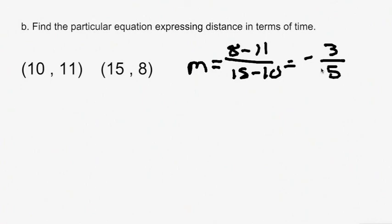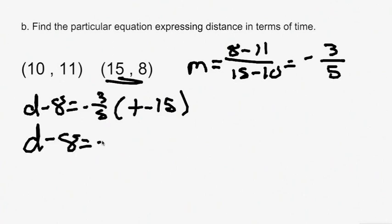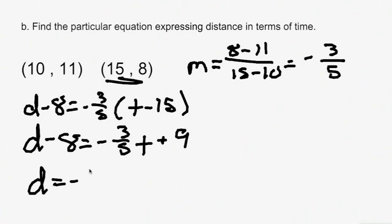So the slope is negative 3 fifths. Now we plug it into our point-slope equation using the point (15, 8): D minus 8 equals negative 3 fifths times (T minus 15). Writing this in slope-intercept form: D minus 8 equals negative 3 fifths T plus 9, so D equals negative 3 fifths T plus 17.